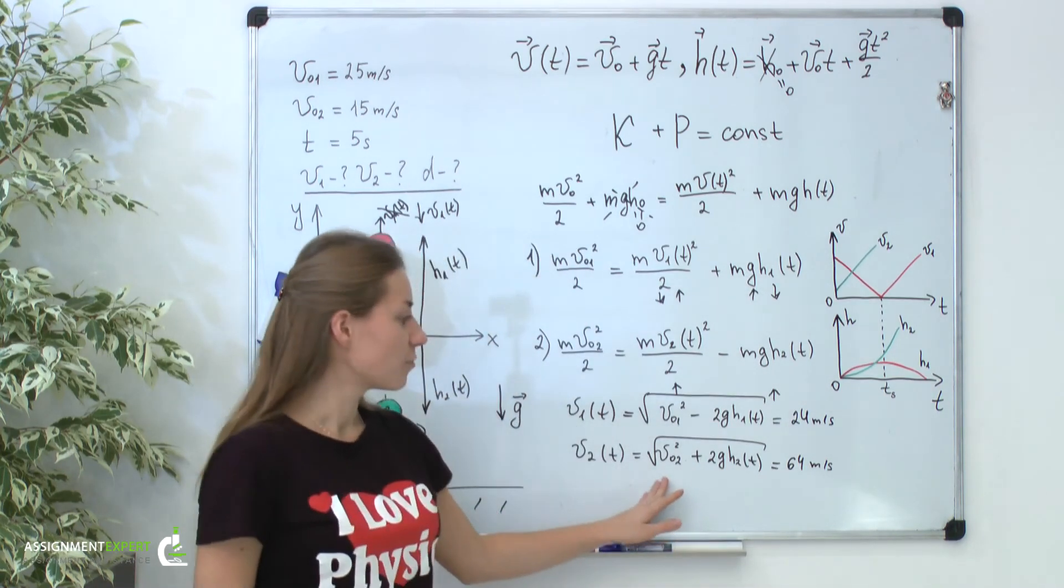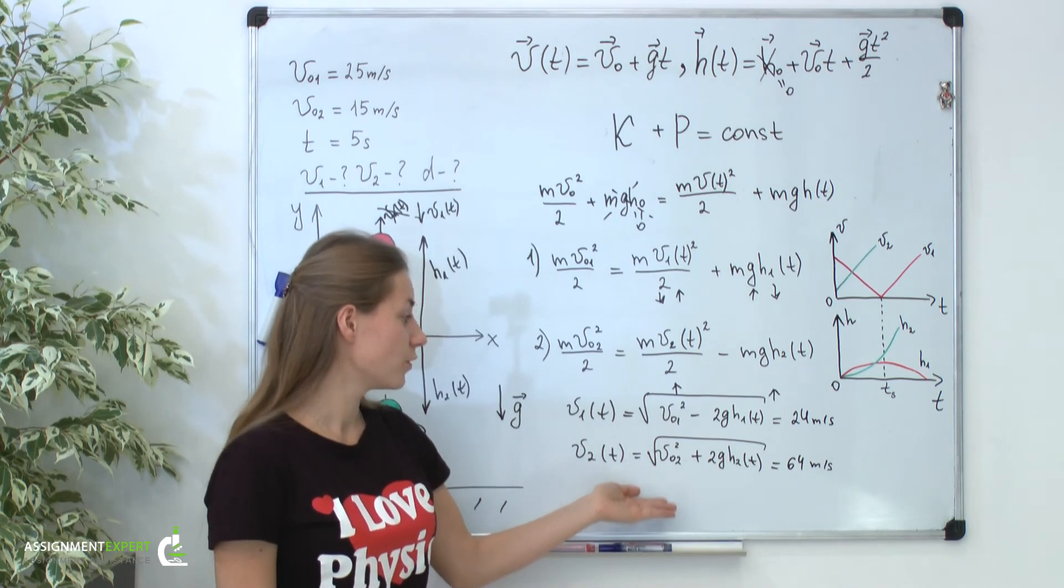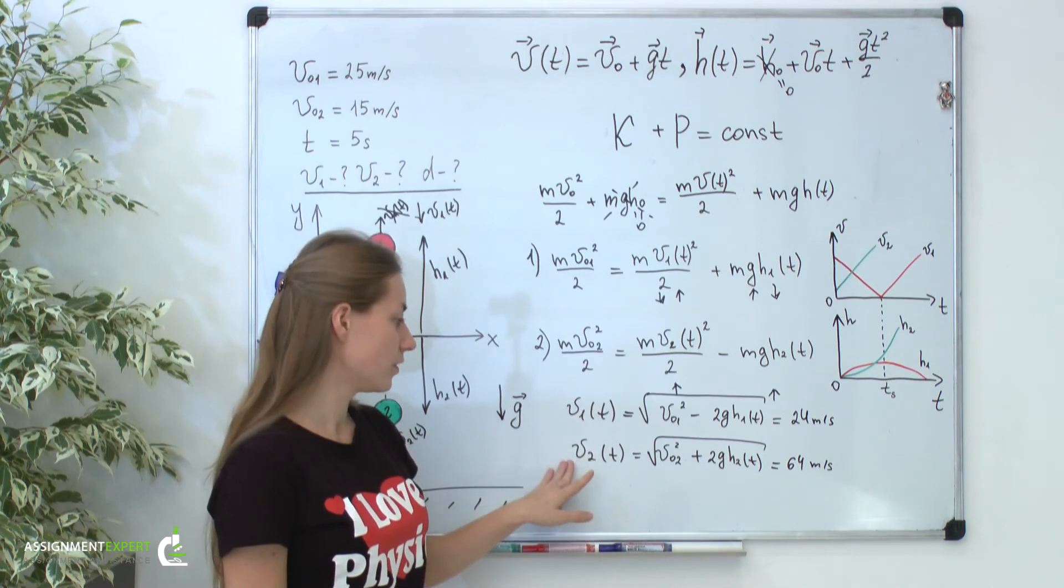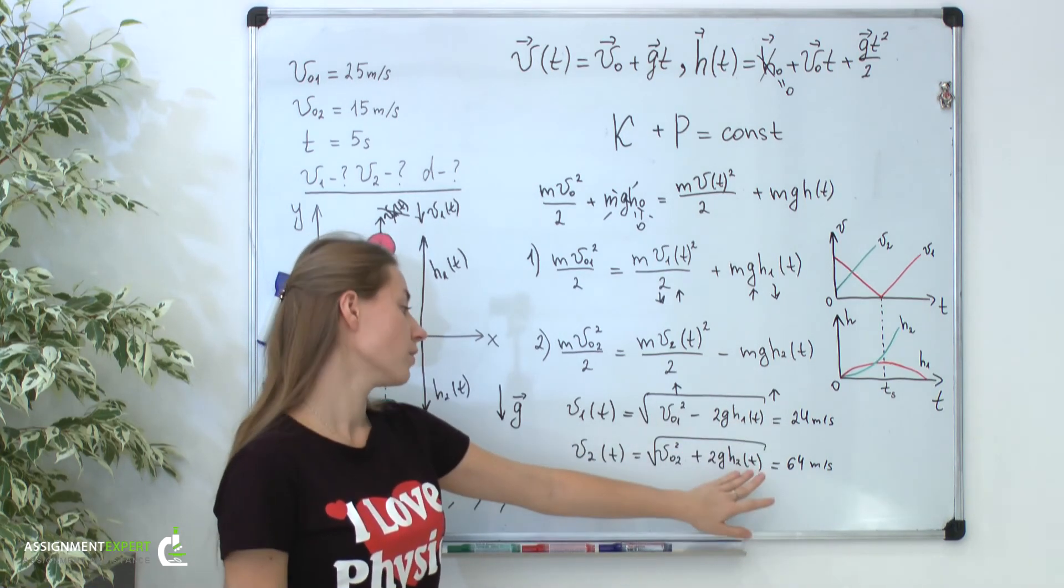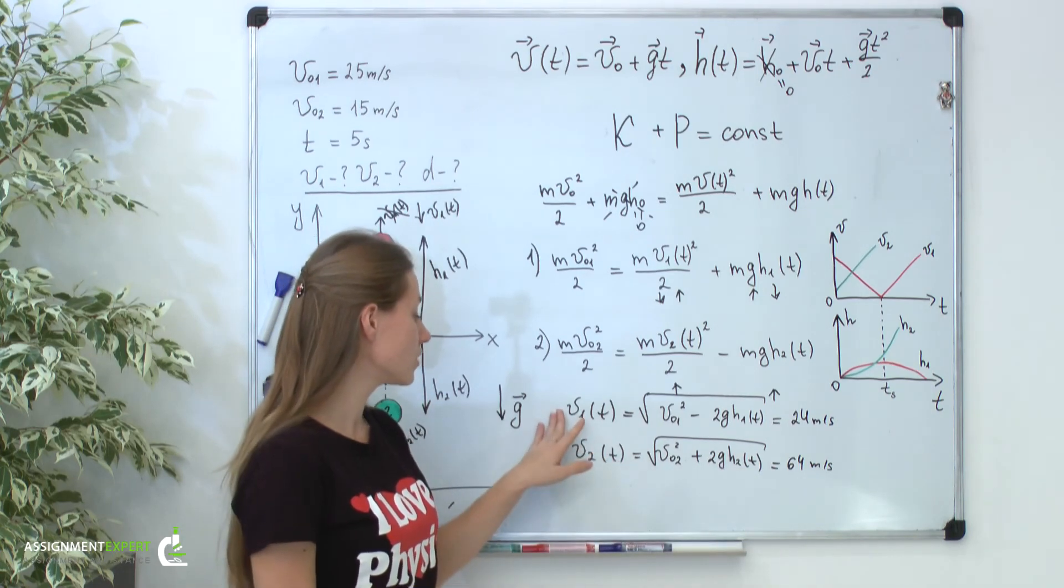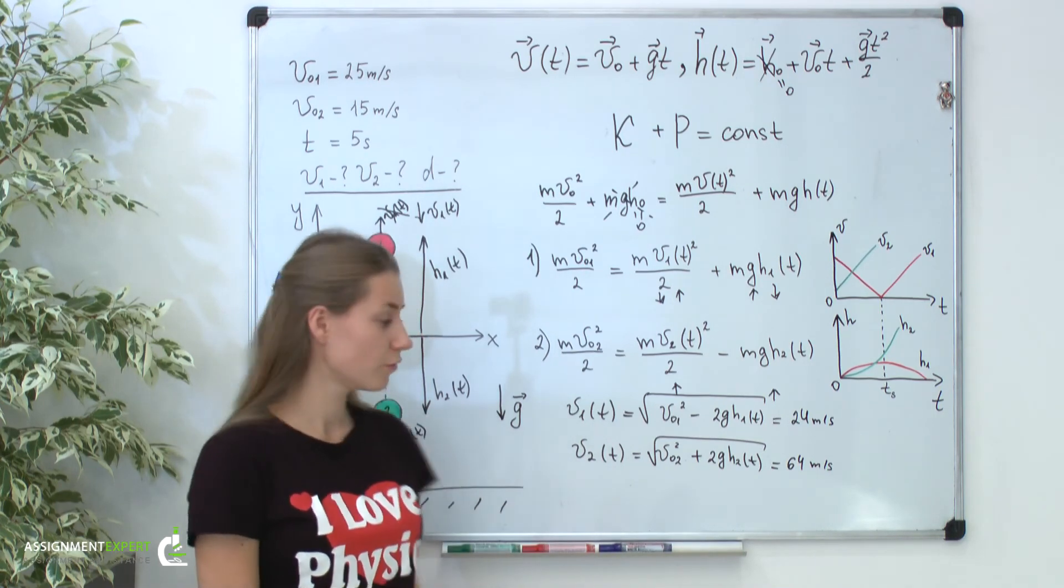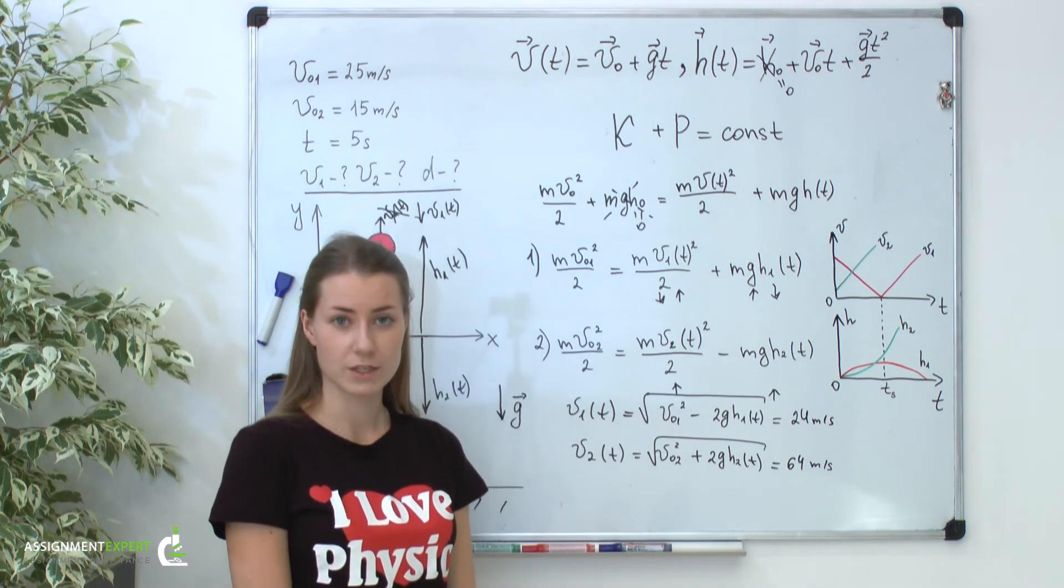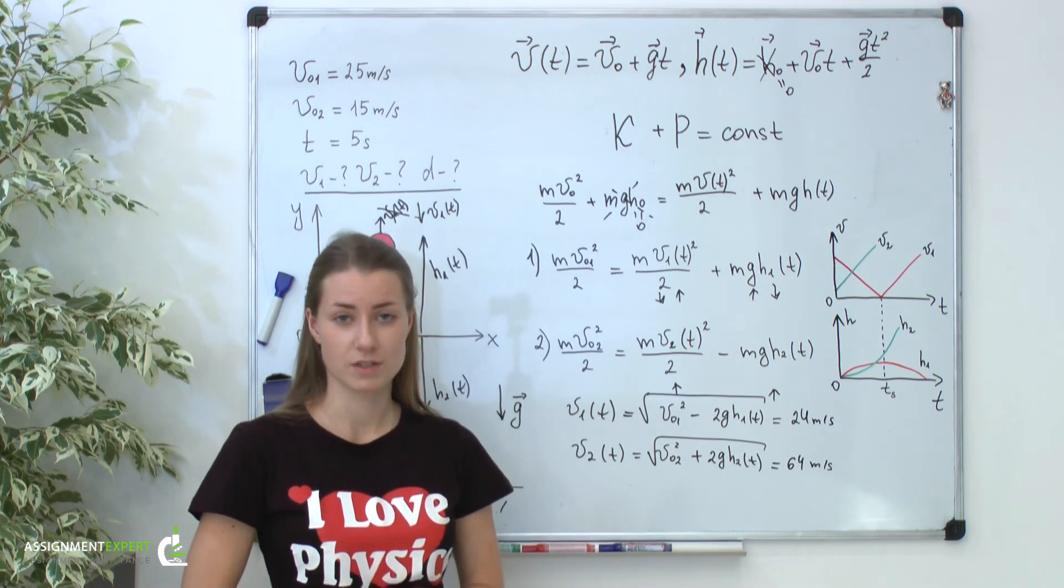So our method really works. But there are some restrictions on the use of this method. You can see that to find any of these velocities, you need first know the distances h1 or h2 of t. If you don't know these distances, you can't find velocity v1 or v2 of t. But a big advantage of it is that we got all the velocities positive automatically. And we don't have to think about any projection and any negative signs.